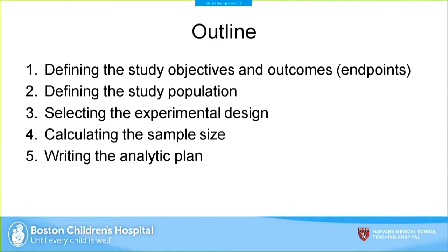In general, there are five steps to consider when designing a study. First, think about your study objectives and endpoints — the measurements you're going to make. Second, carefully define your study population. Third, select the experimental design. Fourth, calculate an appropriate sample size so you'll have enough power to answer the question you're trying to address. Finally, writing out the statistical methods in a clear analytic plan is also very important.